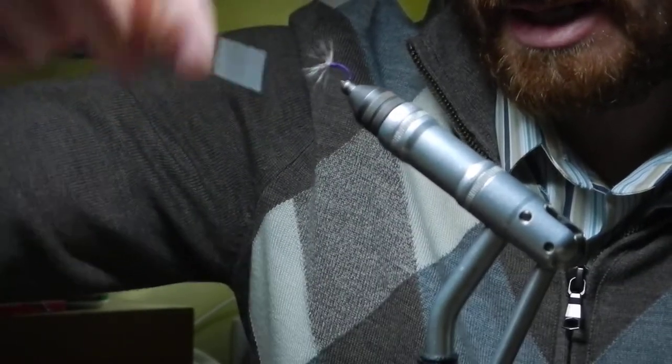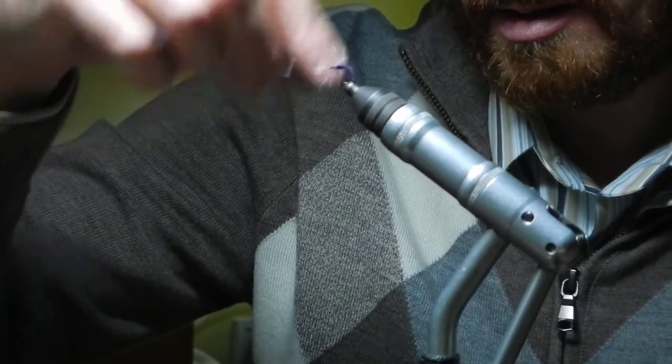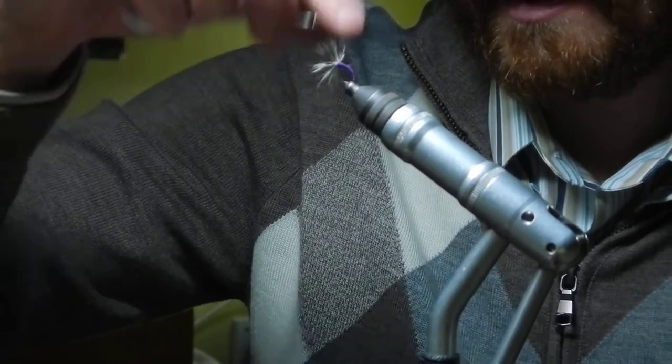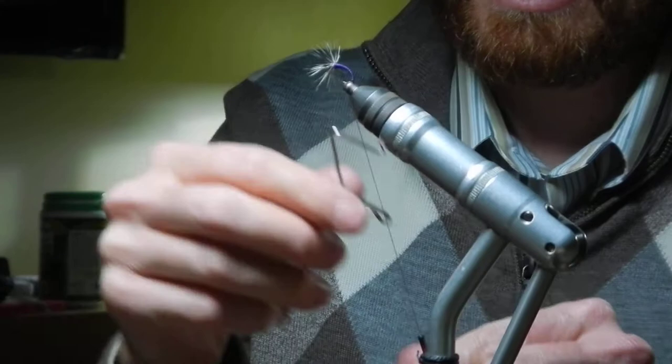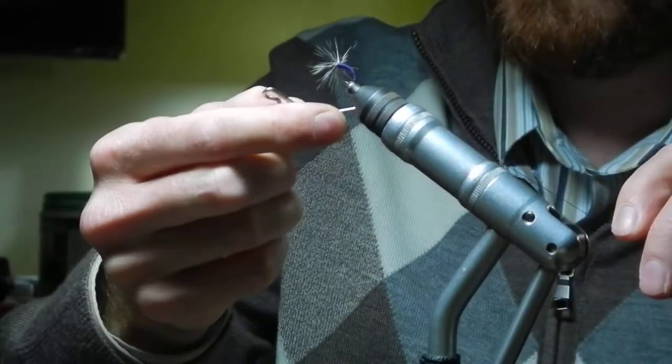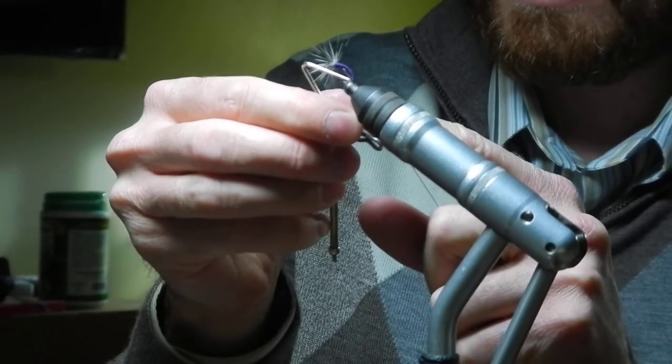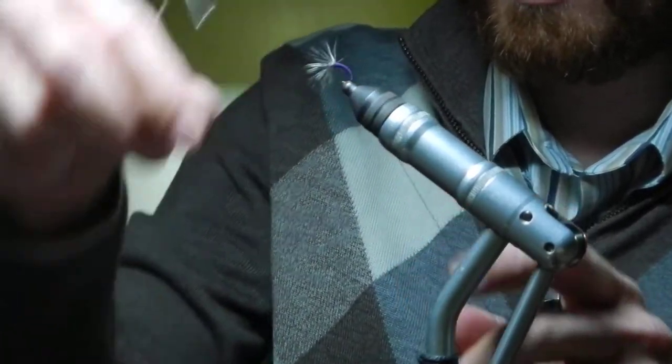Now that I've got a decent taper on the body, I'm going to get my whip finish tool. Whip finish, one, two, three times around. And because I don't like to use glue, I'm going to do a second whip finish on here.